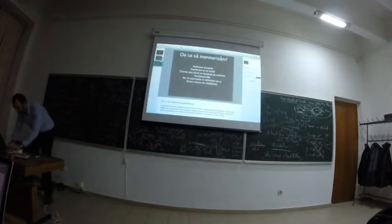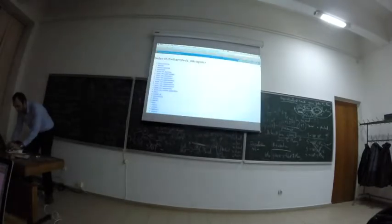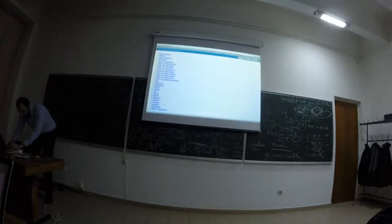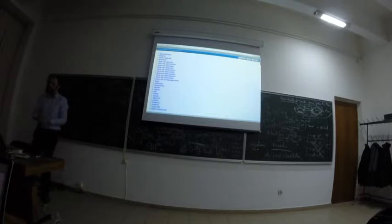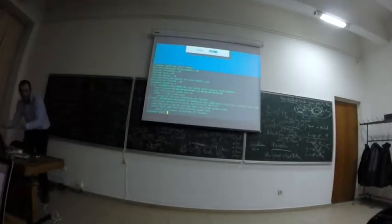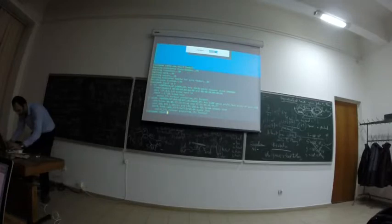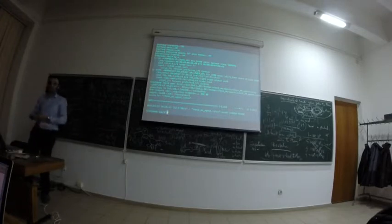Haideți să instalăm și agentul. Agentul pe Linux rulează prin xinetd, iar pe Windows rulează ca un serviciu și deschide portul 6556 implicit. Pentru deployment-ul agentului, de obicei noi folosim o unealtă de automatizare - Ansible, Puppet, ce vă este mai la îndemână. Agentul este doar un shell script, ceea ce este foarte portabil și foarte ușor de extins.